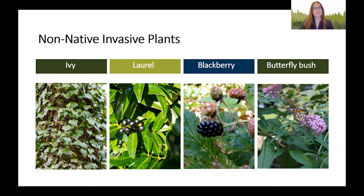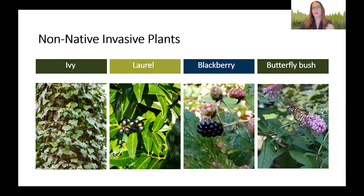On the other side, we have ivy, laurel, and blackberry. All of those spread using mostly berries, but can also break off and grow a whole new plant. Many birds eat those berries, but don't destroy the seeds — instead they digest them, give them a little fertilizer packet, and deposit them so they germinate even more easily. Many of these species are still sold as landscaping plants despite the damage they do. Using native plants can help prevent the propagation of invasive plants and avoid new invasives being introduced.